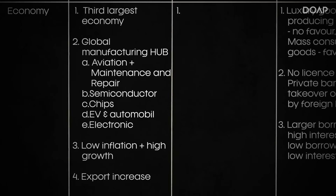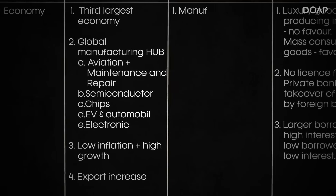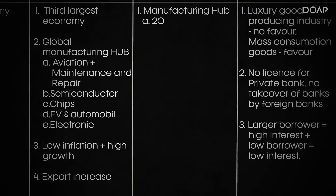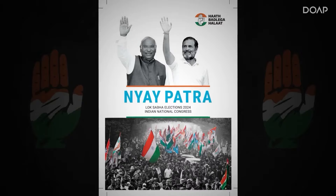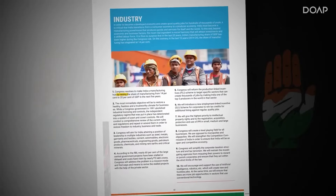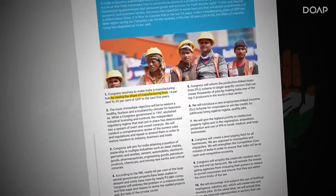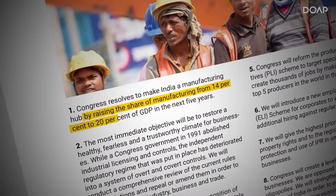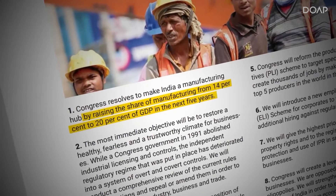If you talk about Congress's policies for economic growth, there hasn't been a lot mentioned. The only thing mentioned is that they would like to make India a manufacturing hub and increase it by 20%. Similar to the BJP, they haven't mentioned their timeline on how to achieve this.